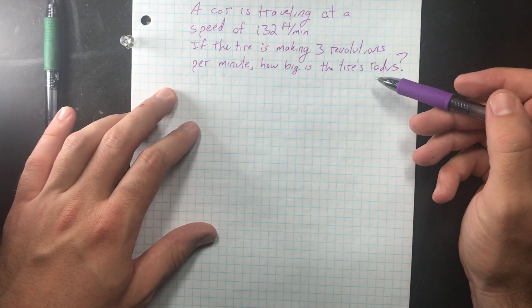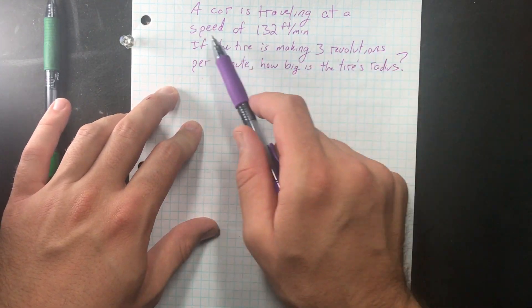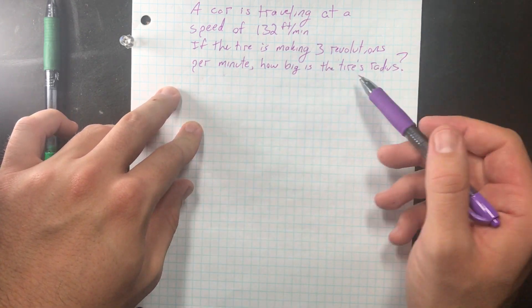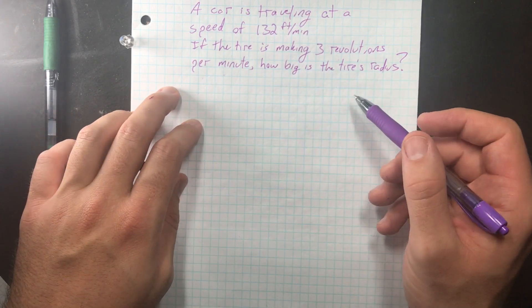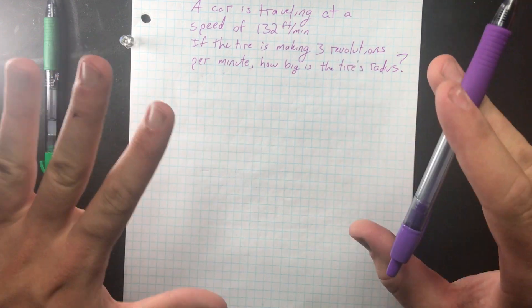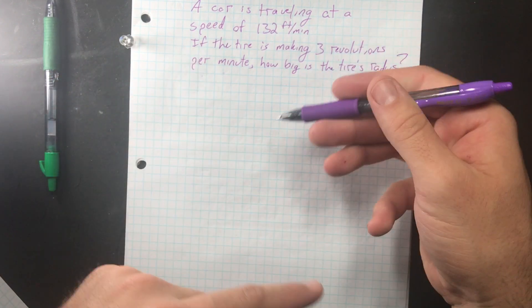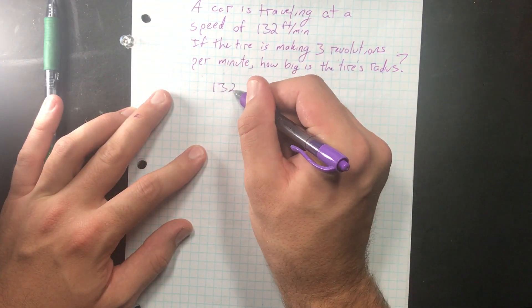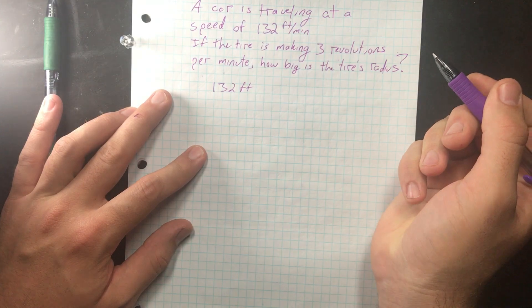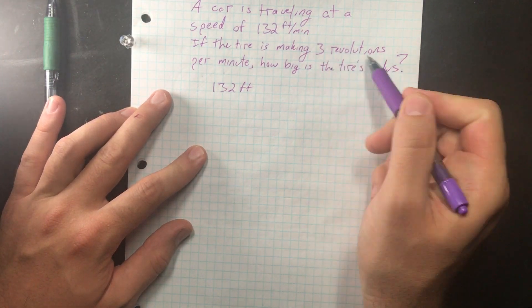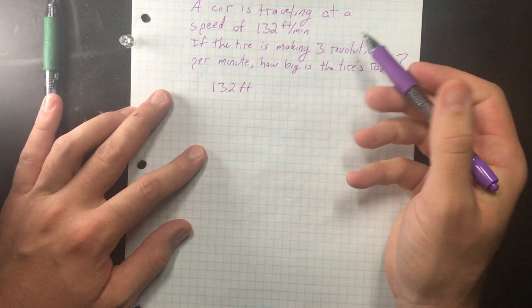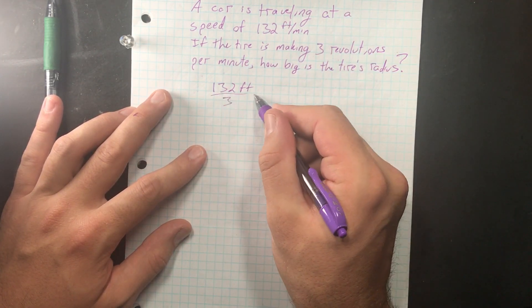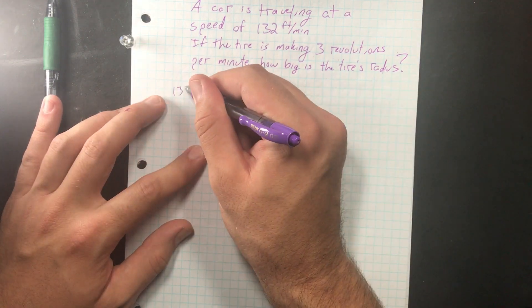Let's do one that's a little bit harder than this. Here is a harder version of these problems. A car is traveling at a speed of 132 feet a minute. If the tire is making three revolutions per minute, how big is the tire's radius? If you're feeling good about it, pause it and give it a shot. I'm going to take you guys through how to do this. So we know that it is going 132 feet every minute, and to do that, it needs to make three revolutions. So I want to know how big or how much distance this wheel covers for one revolution, so I'm going to divide it by 3, 44.